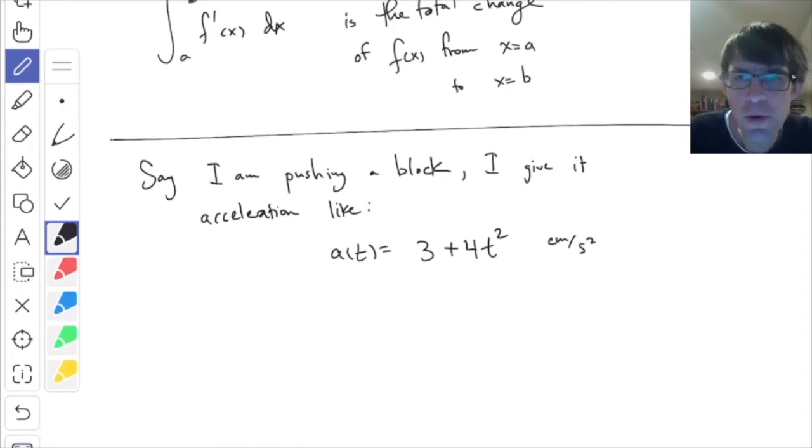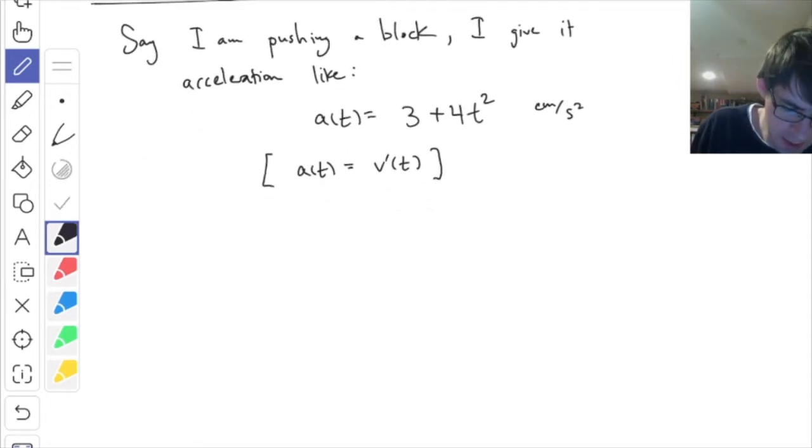A of T equals 3 plus 4T squared, in centimeters per second squared. Let's say this is the acceleration I'm giving to this block. You don't have to know anything about physics except this one simple fact that everybody knows: acceleration is equal to the derivative of velocity. Acceleration means how quickly the speed is changing.